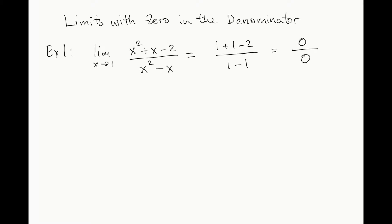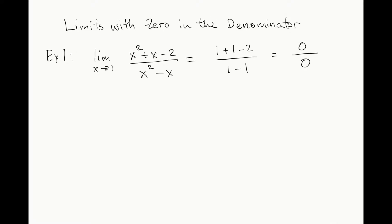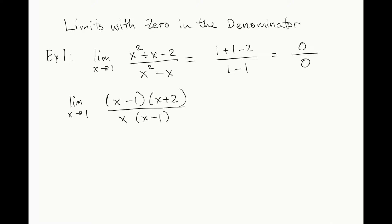We do this by canceling out common factors. In this case, factoring out the numerator and denominator, I get (x minus 1)(x plus 2) divided by x times (x minus 1). We see that there is a common factor (x minus 1) which cancels out. And we are left with the limit as x goes to 1 of (x plus 2) over x. This we can solve by substitution: we get (1 plus 2) divided by 1, which is equal to 3.